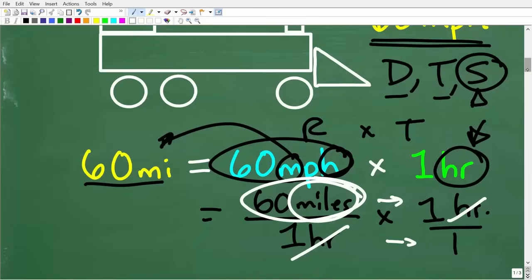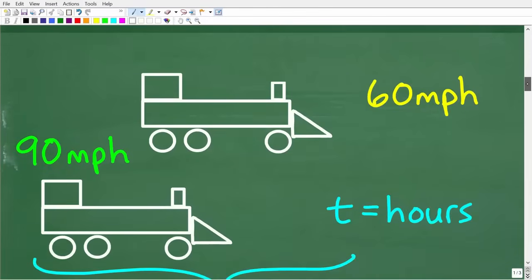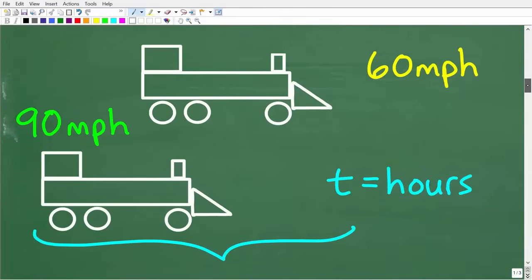Okay, so keep that formula in mind, because that really is going to be the key to solving this problem. All right, so here is our lovely problem. So we have this train, it's going 60 miles per hour, and it already has one hour on this train right here going 90 miles per hour.